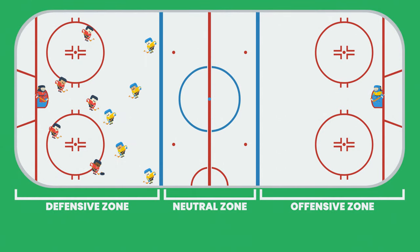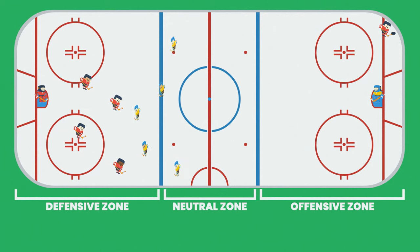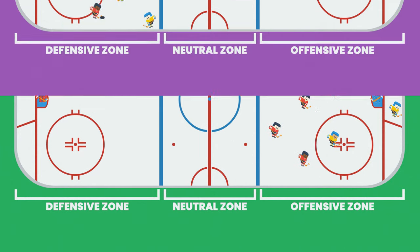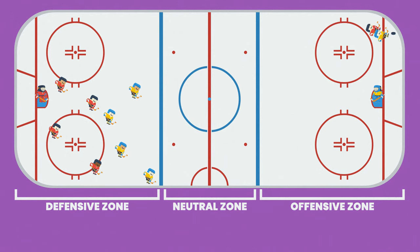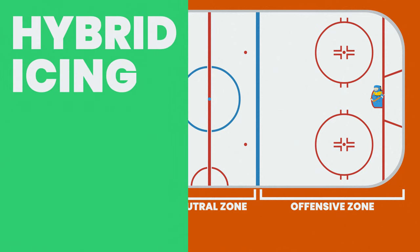One thing I haven't mentioned is that it's not icing if your player gets to it first. So in theory, you can dump the puck all the way from your side and have a fast skater on your team get to it first while being onside, of course, to negate icing and continue play. Traditionally, this created one-on-one races to the puck between players from opposing teams, and two players racing at top speeds towards the boards can be a recipe for disaster. To avoid this, the NHL introduced hybrid icing.